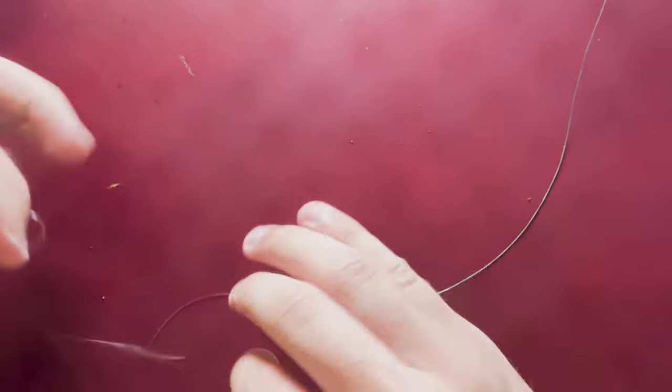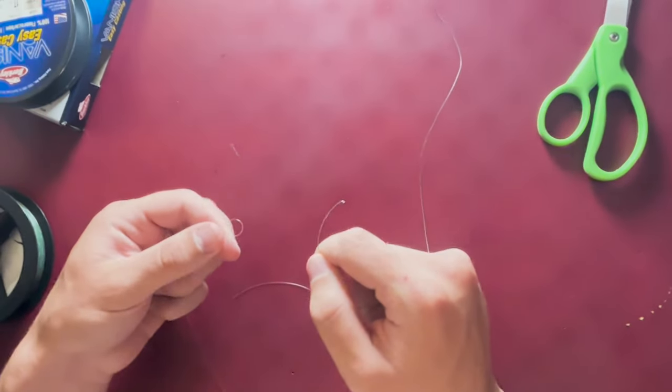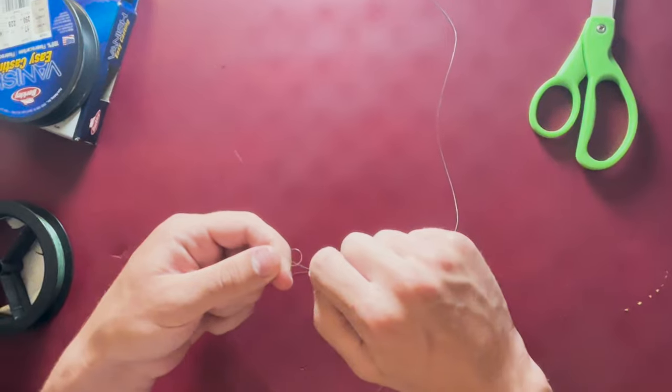Once you have your loop, you're going to take your main line, which in this case is this green braided fishing line, and you're going to go through the loop.